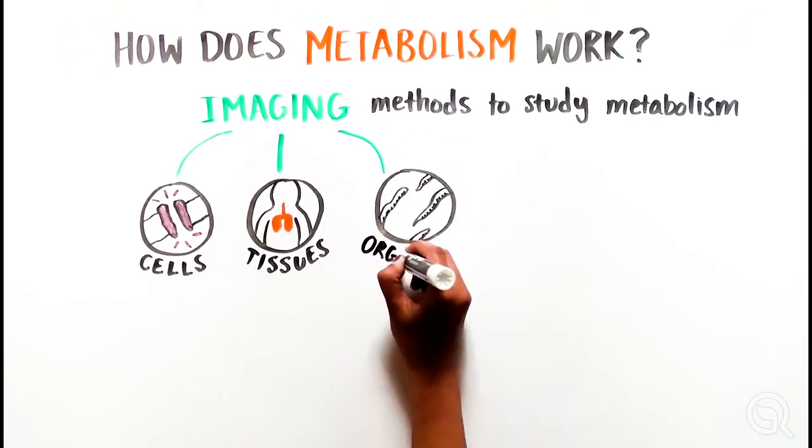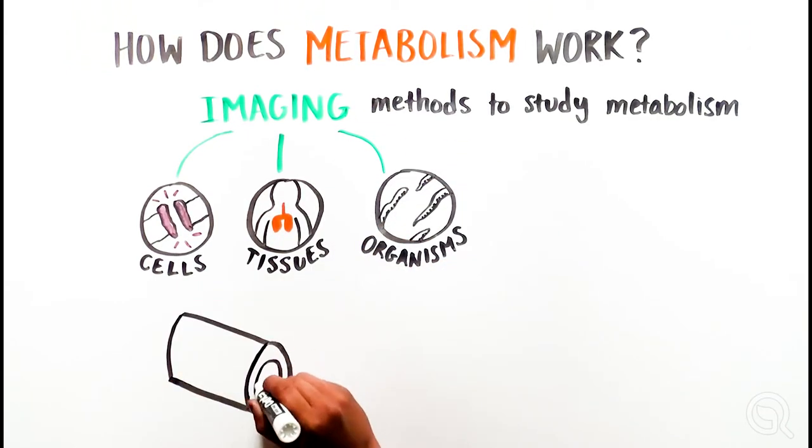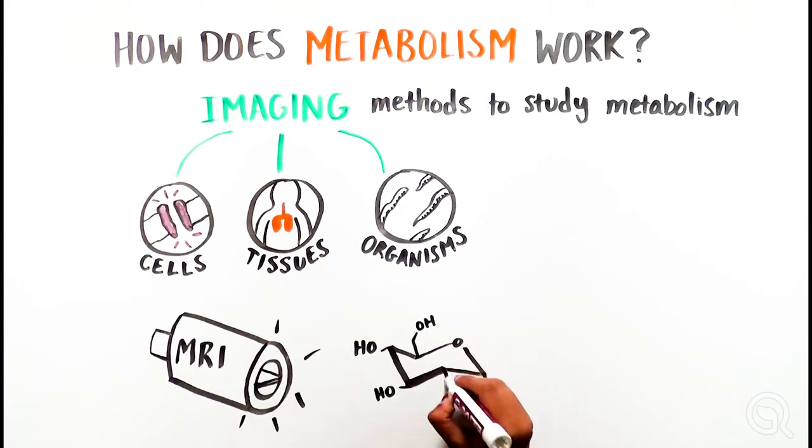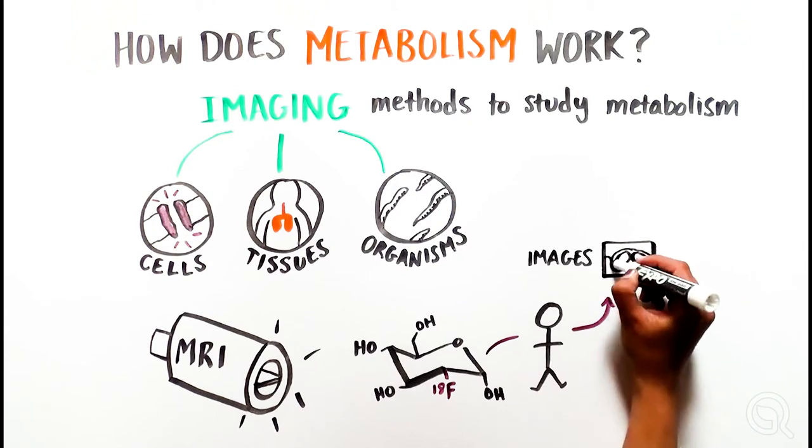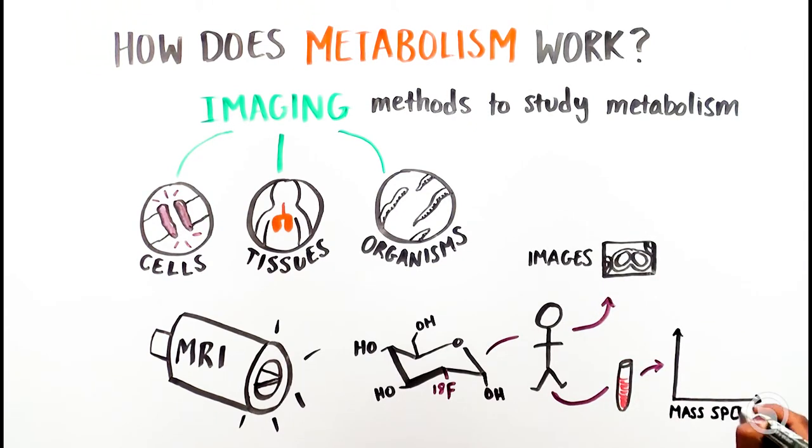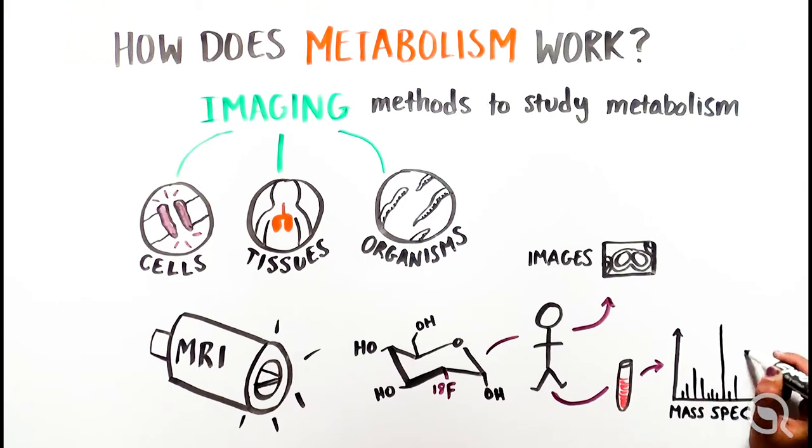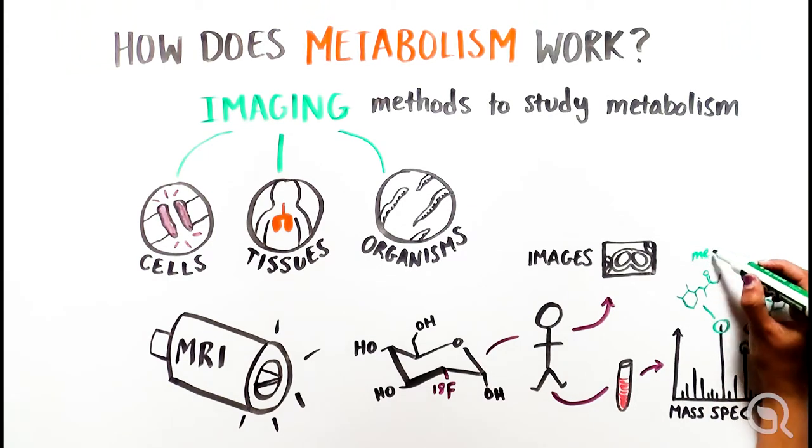These methods can use massive magnets, magnetic resonance imaging, or MRI, or radioactive versions of fuels to look inside the body. We can also extract cells and tissues from these organisms, and use methods such as mass spectrometry to provide even more information on a huge number of metabolites that our bodies make from food.